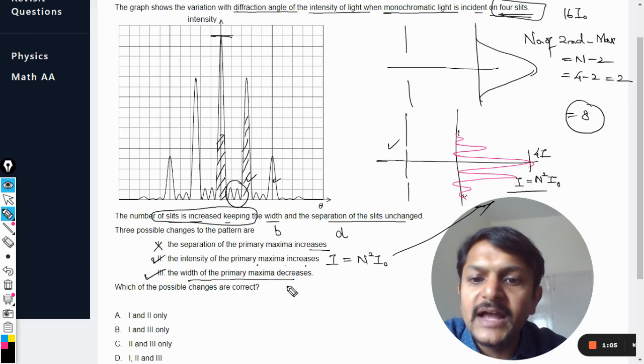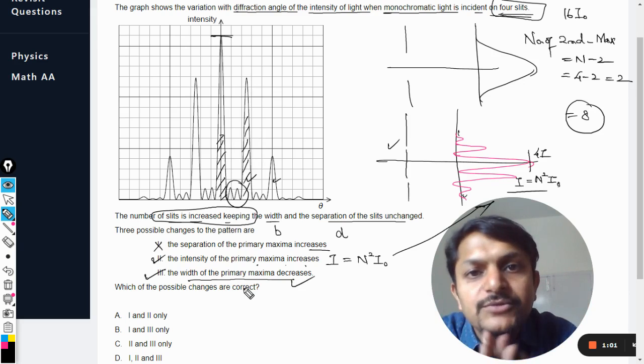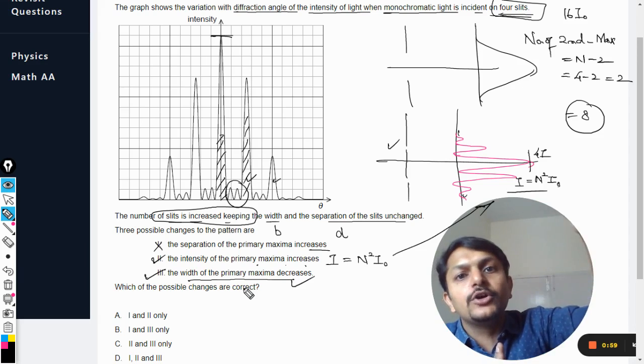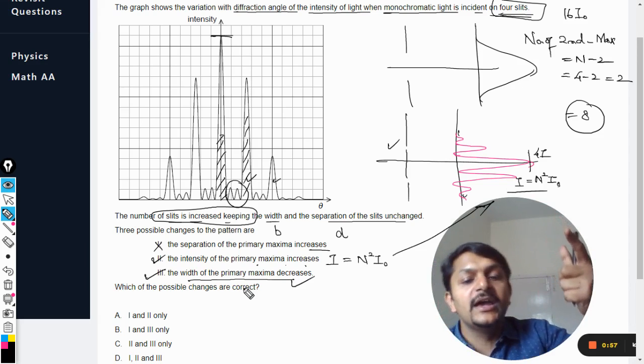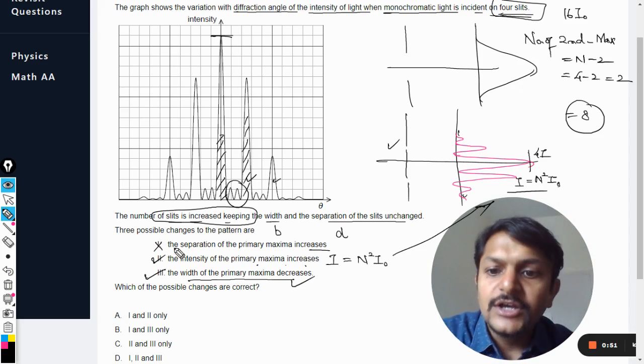So these fringes will become thinner, there is no doubt about that. So the width of the primary maxima will decrease and it will become sharper as well as longer, because the intensity is now 64 into I₀. Earlier it was 16 into I₀, now it is 64 into I₀, so the intensity is more and the fringe is thinner.